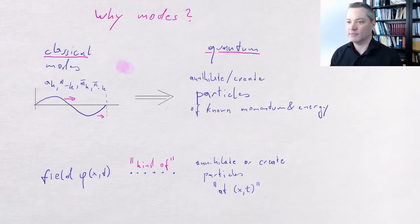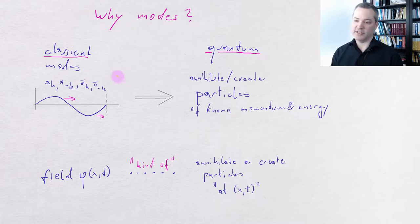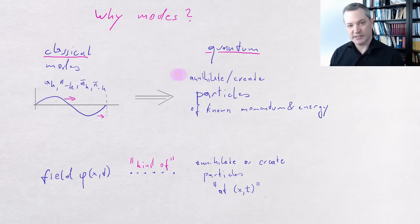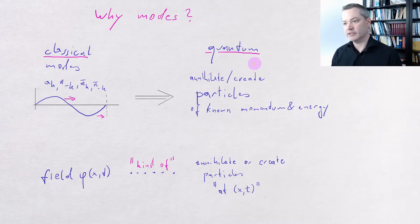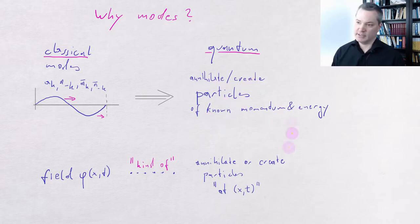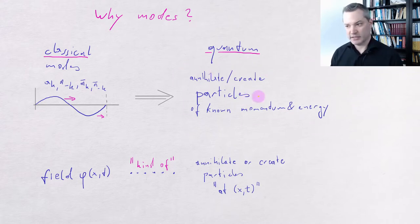Let's first talk about why we might want to spend a lot of time familiarizing ourselves with the modes of the field. The modes make it easier to understand the classical behavior of the field, but that's not really the point. What is much more interesting to us is that in the quantum theory of the field, the modes become exactly the objects that annihilate and create particles of known momentum and energy. And these will be easy to make mathematically precise.